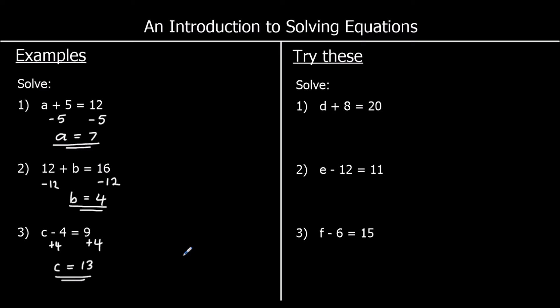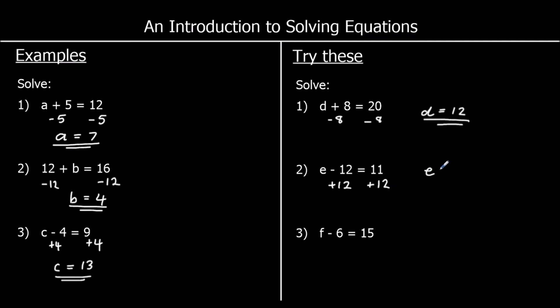I've got three for you to try here, so pause the video and give them a go. Question one: I've got d plus 8 is equal to 20. I'm going to subtract 8 from both sides of the equation, and that will tell me that d is equal to 20 minus 8, which is 12. For the second one, I'm going to plus 12 to both sides of the equation, so e is equal to 11 plus 12, which is 23. And the third one, I'm going to plus 6 to both sides of the equation, so f is equal to 21.